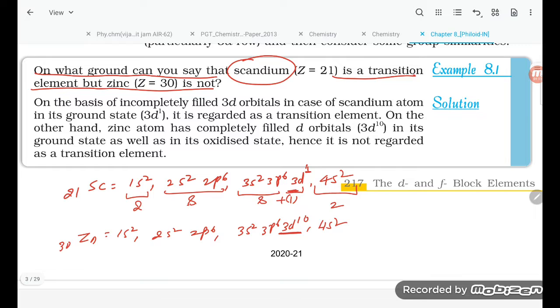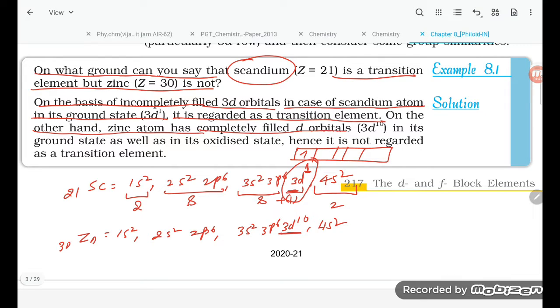Let us see on the basis of incompletely filled 3d orbitals. It is the incompletely filled because here how many electrons are there? One electron in case of scandium atom in its ground state 3d¹. It is regarded as a transition element because it is having incompletely filled d orbital. How many orbitals are there? 1, 2, 3, 4. So one electron is there. On the other hand, zinc atom has completely filled d orbital.